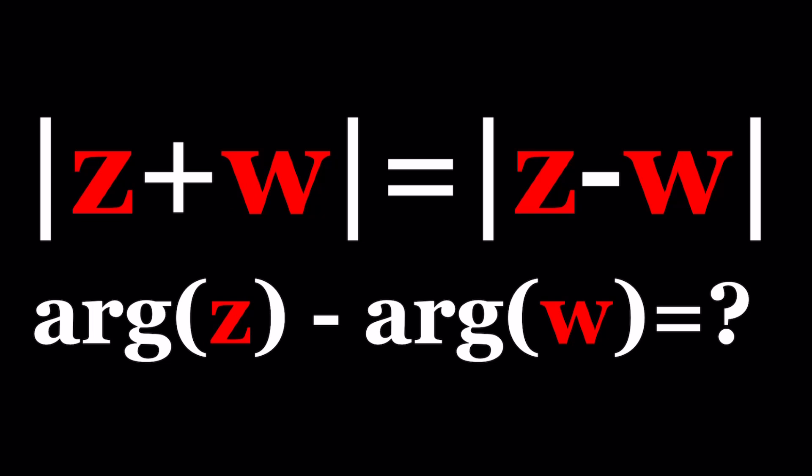We have the absolute value of z plus w equals absolute value of z minus w. Under these conditions, we're supposed to find the argument of z minus the argument of w. This might look difficult, but we're going to look at it from two different angles to help you understand the context.